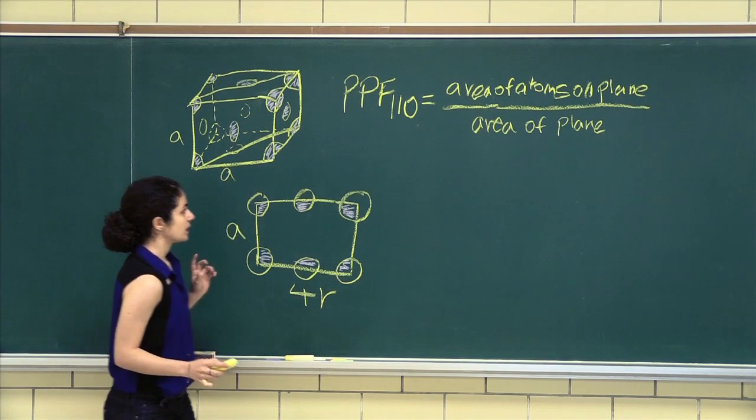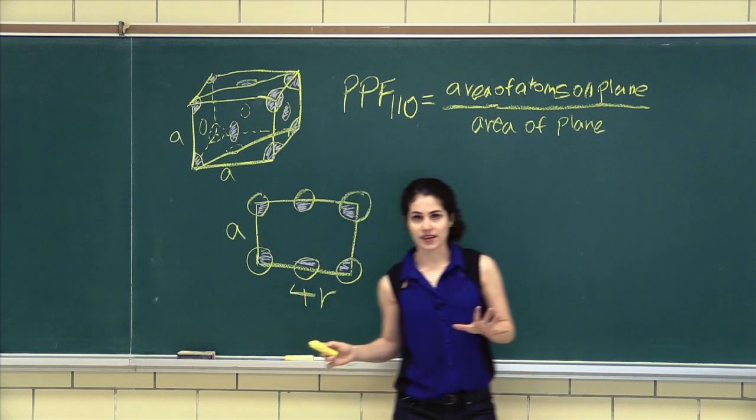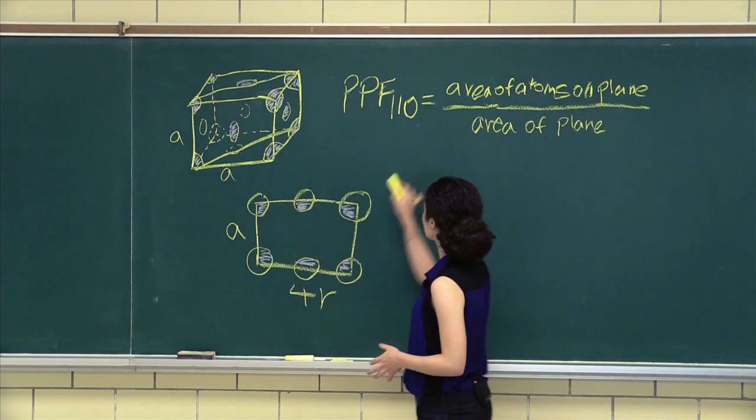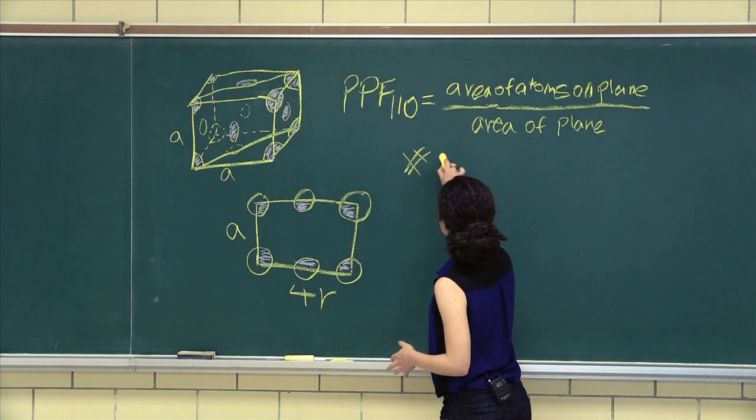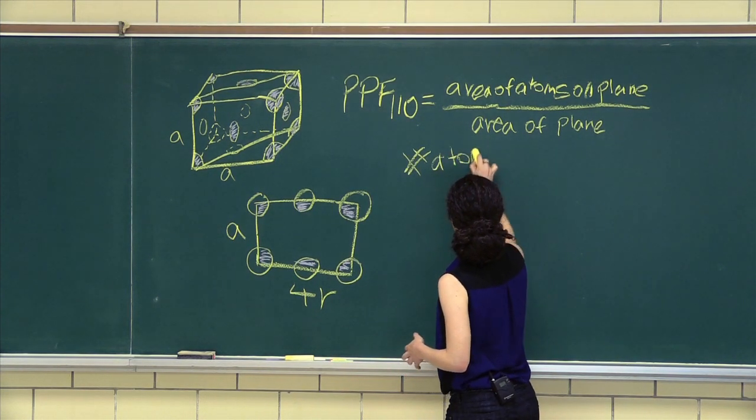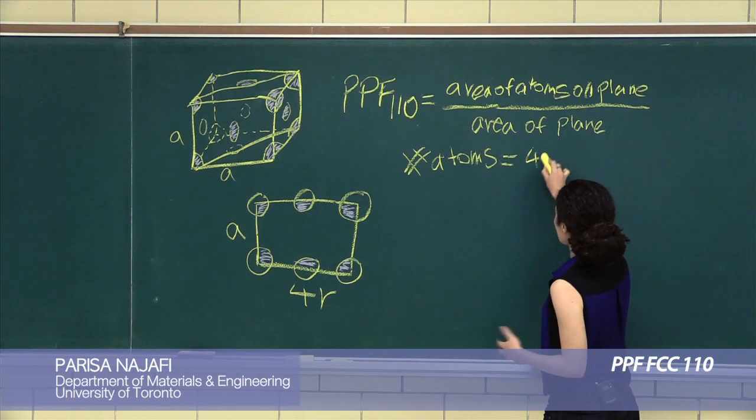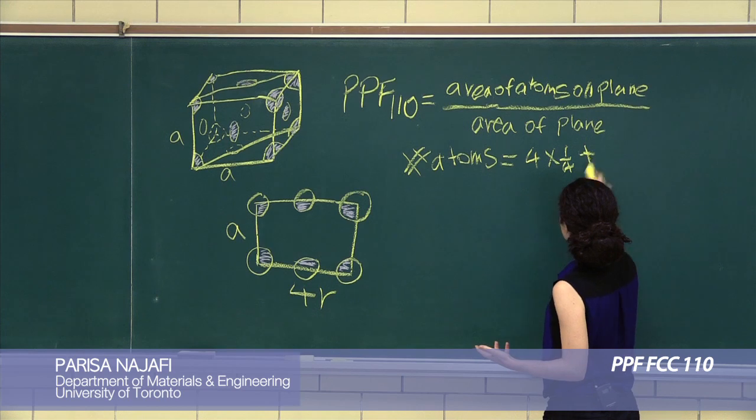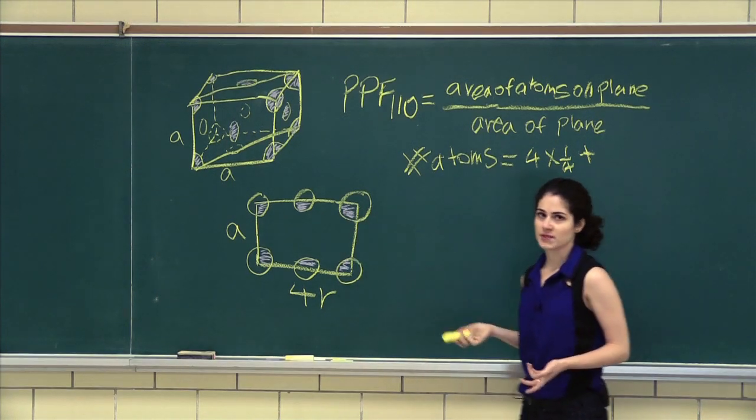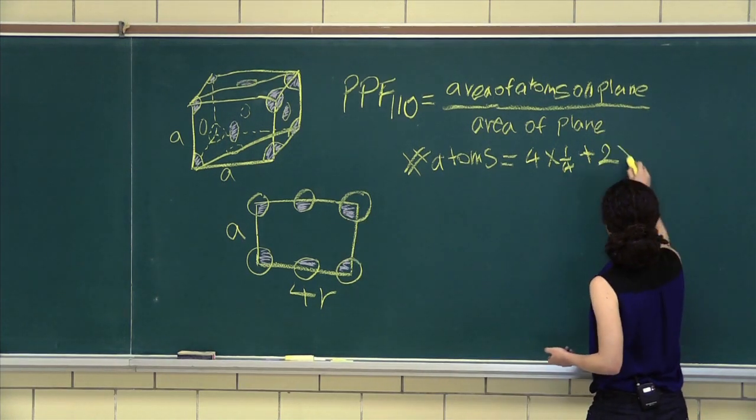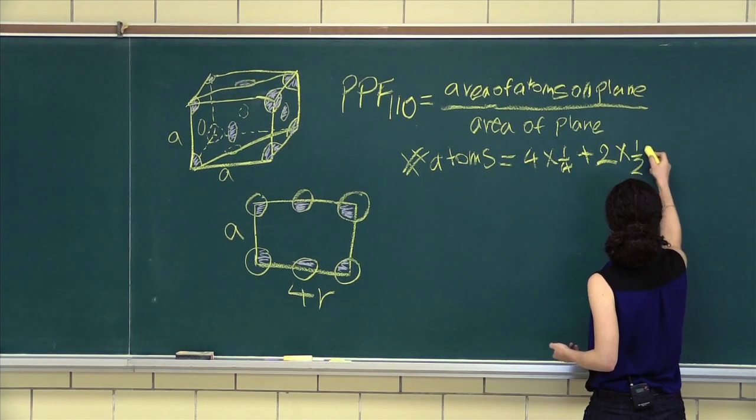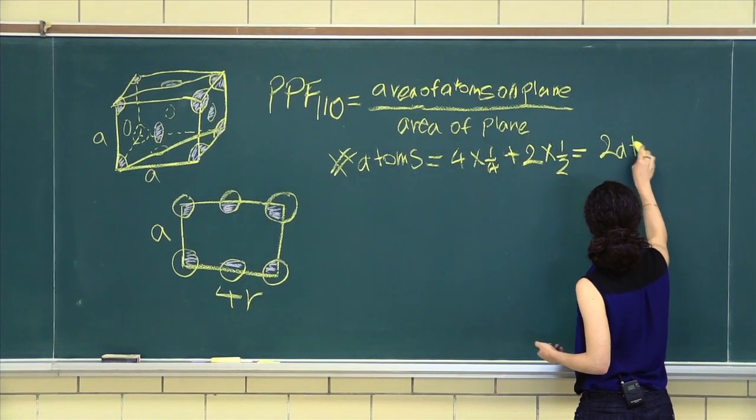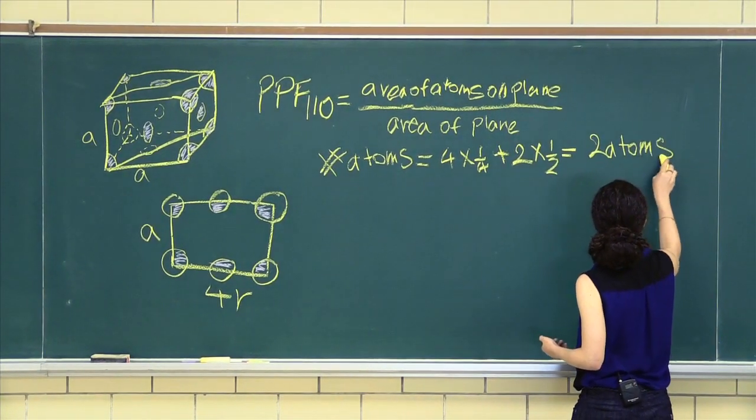Okay, so let's find the number of atoms on this plane. We have 1, 2, 3, 4, it's 4 times a quarter plus 1, 2 times a half. This gives us 2 atoms. Perfect.